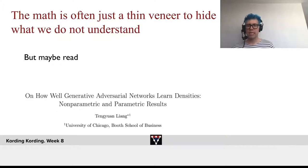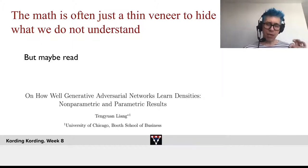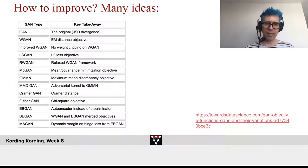These ideas are often based on mathematical intuitions. And sometimes, mathematical intuitions are great. But sometimes, they just hide that there's things that we don't really understand yet. I can highly recommend the paper on how well GANs learn densities, non-parametric and parametric results, if you're interested in more details there. Given all these mathematical ideas, and there's countless papers that deal with different ideas on how to make GANs better.